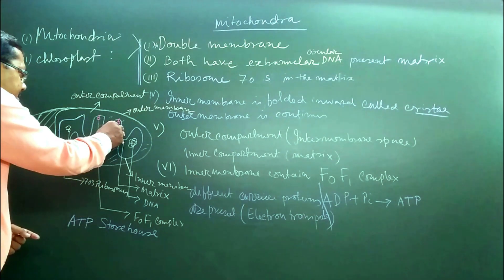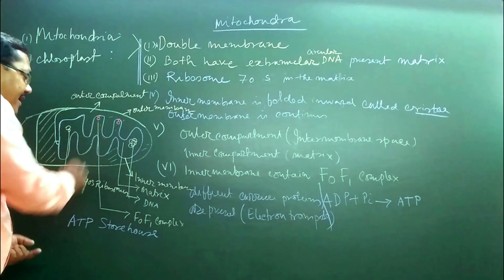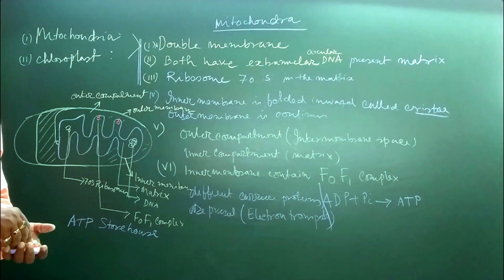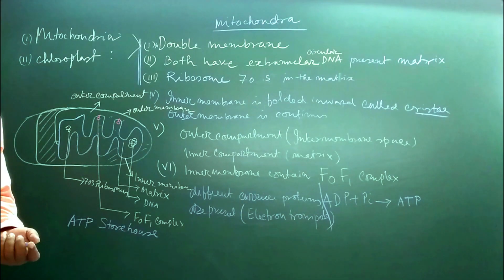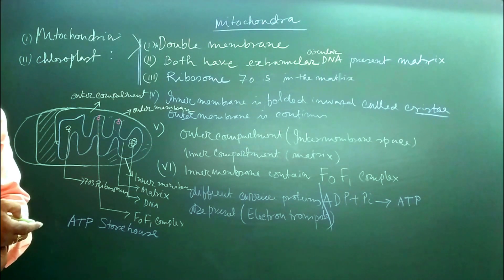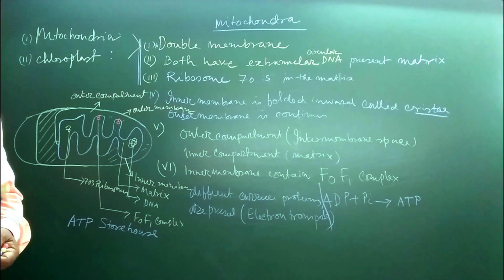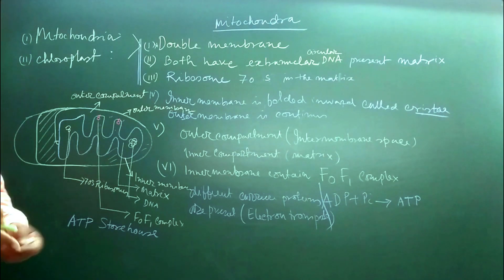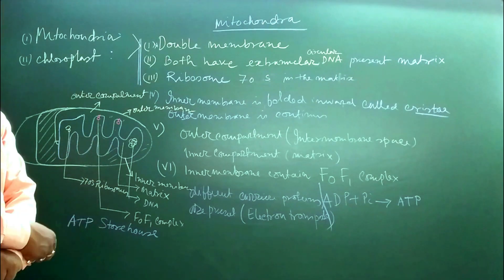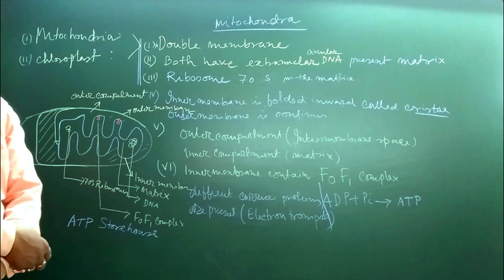The main biochemical process — the Krebs cycle, or citric acid cycle — occurs inside the mitochondrial matrix. The enzymes for these reactions are present in the matrix.